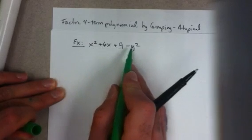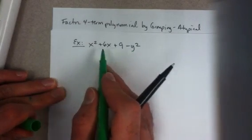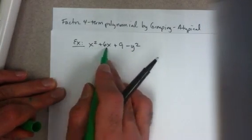You see that we have 1, 2, 3, 4 terms in this polynomial, and usually it's nice to group 2 and 2.